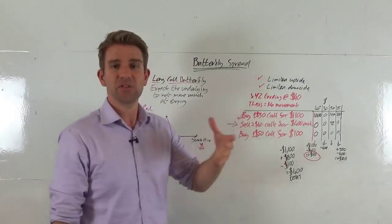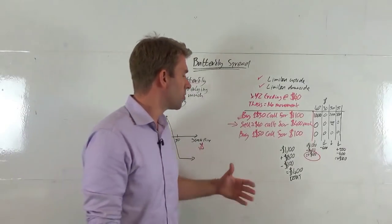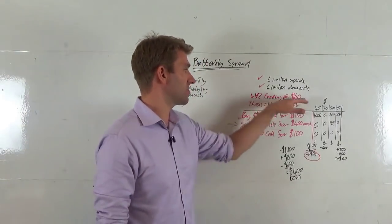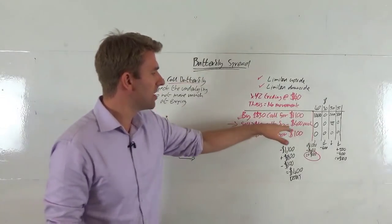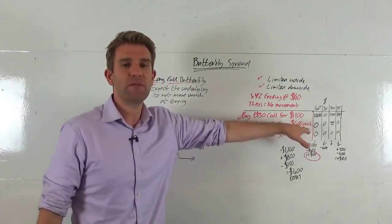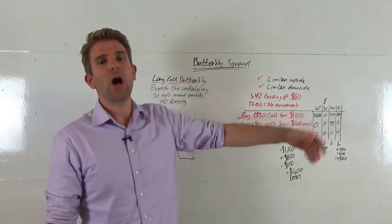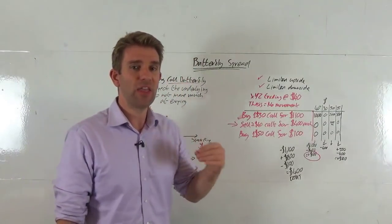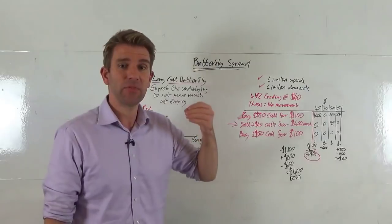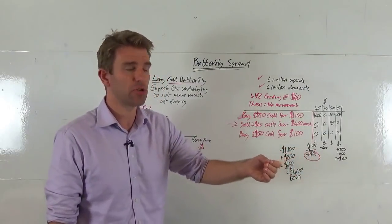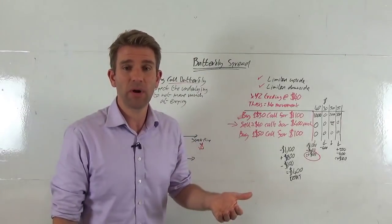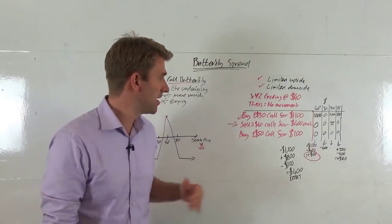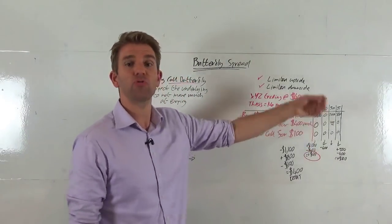So what do we do? We decide to sell calls at the strike price — that's $40, the current price, which matches our thesis. We sell two of those and we get $400 credit for each, so it's currently trading at $4 per contract. That's one options contract at 100 shares. The call gives you the right but not the obligation to buy the underlying stock XYZ at the strike price at expiry. The $40 call expires worthless if it sits at $40 or less. So we sell two of those and get $800 credit.